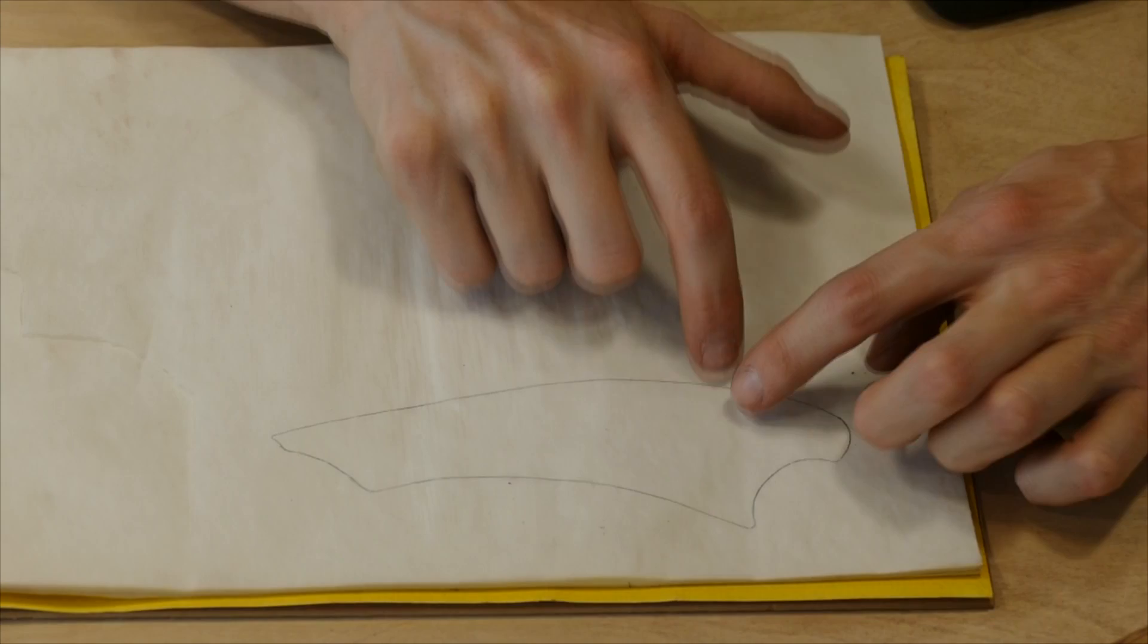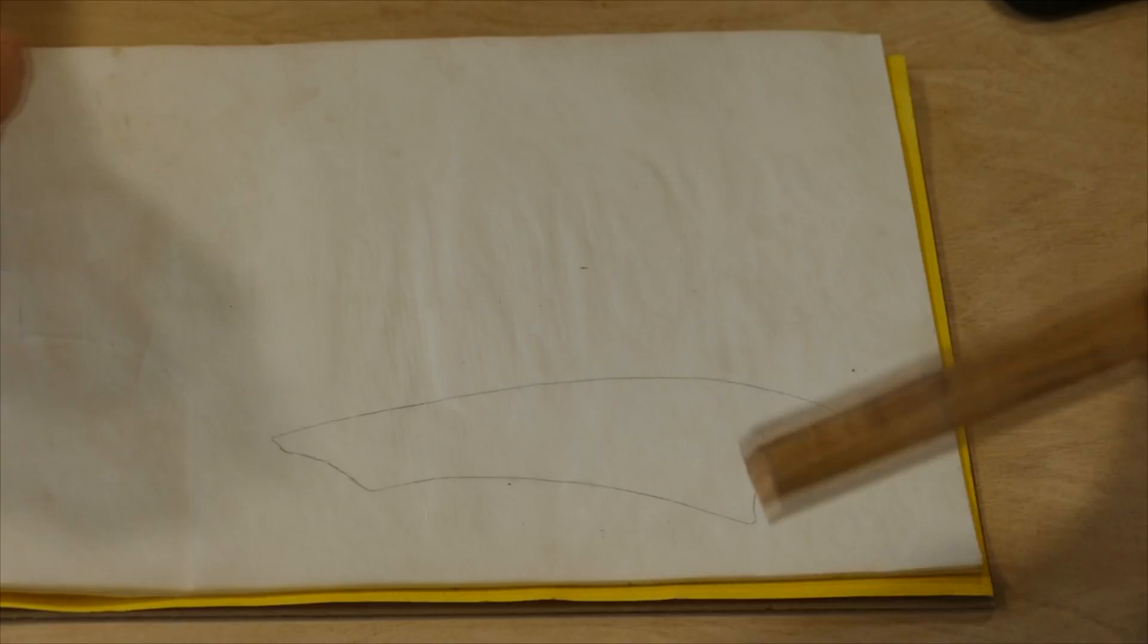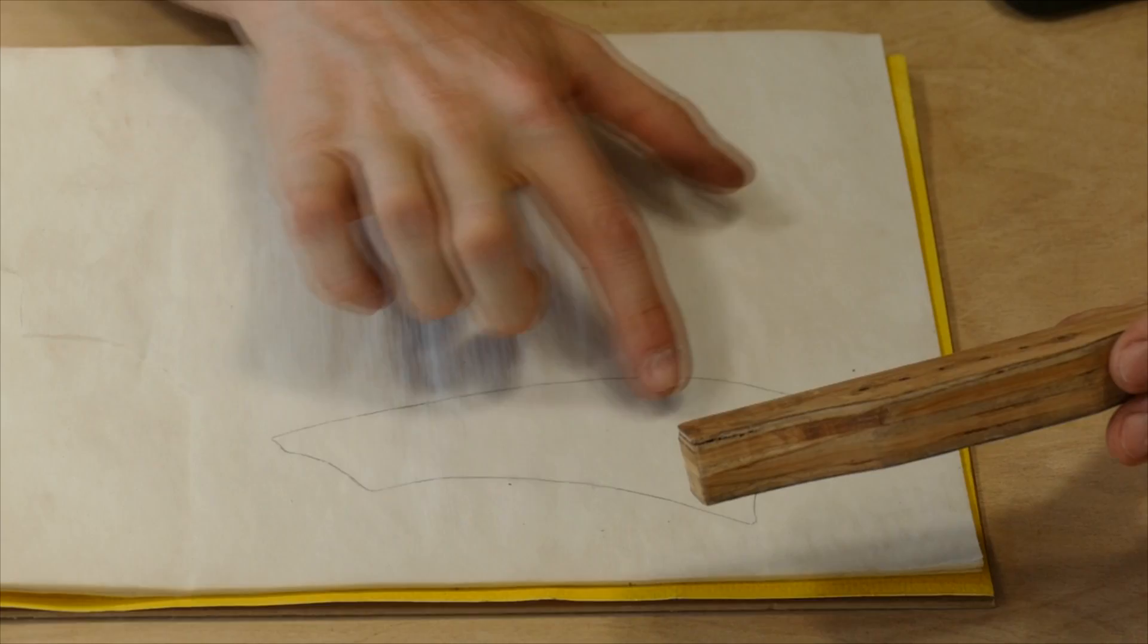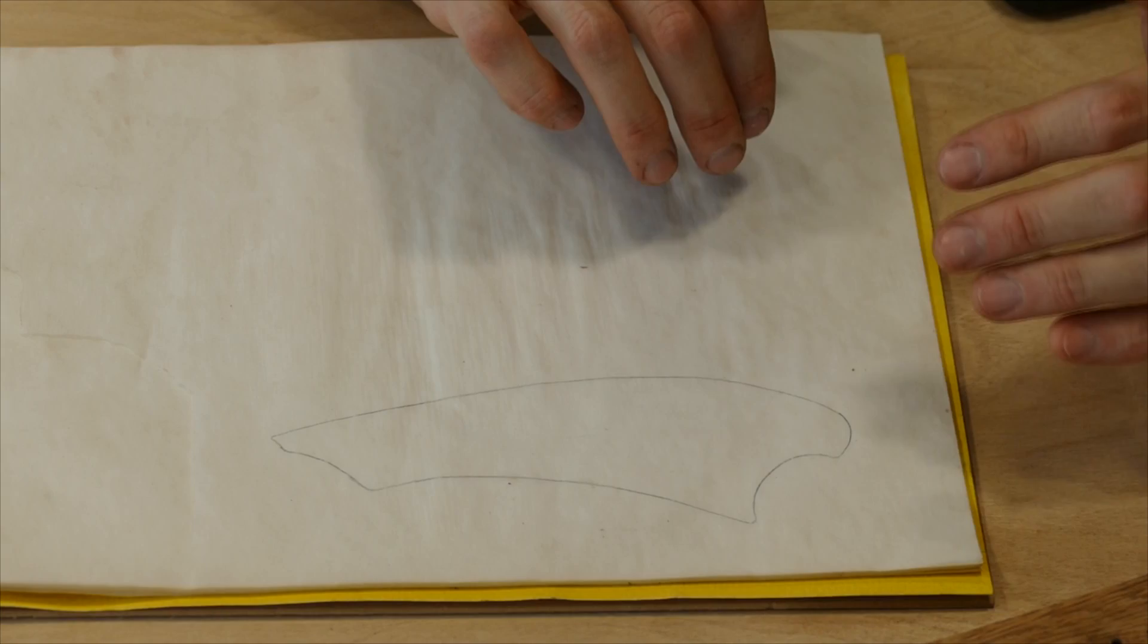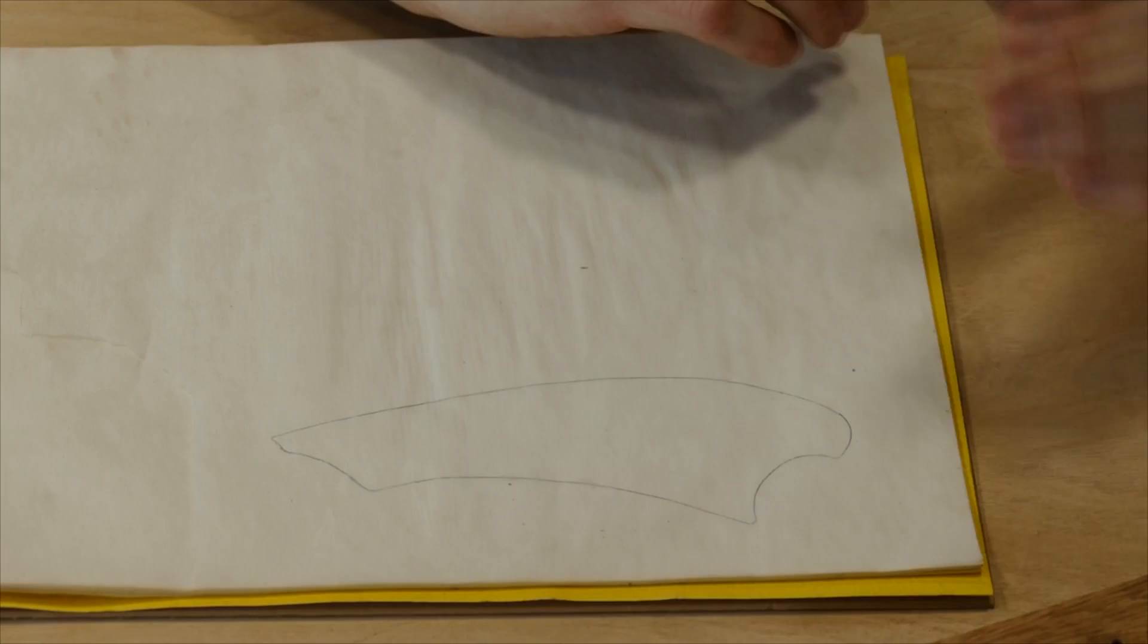And then on the flip side you also don't want the bridge pin holes to be super close to the back edge or super close to where your saddle slot is supposed to be. You want to make sure they're set back just far enough to give you an appropriate angle for the strings to bite down on the saddle. We'll talk more about that later.